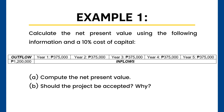For example number 1: Calculate the net present value using the following information and a 10% cost of capital. The outflow is 1.2 million pesos and we have an inflow of 375,000 for each year for 5 years. Letter A: Compute the net present value. Letter B: Should the project be accepted? Why?